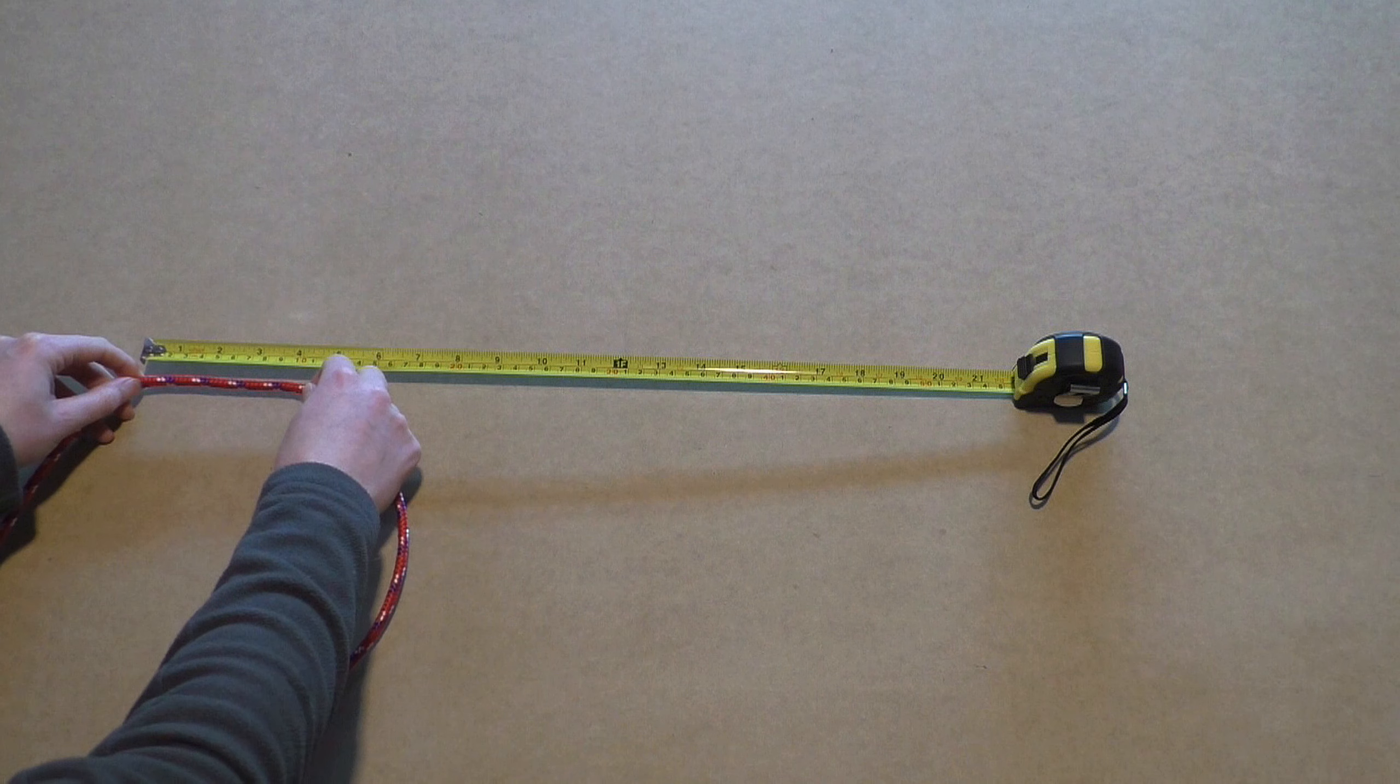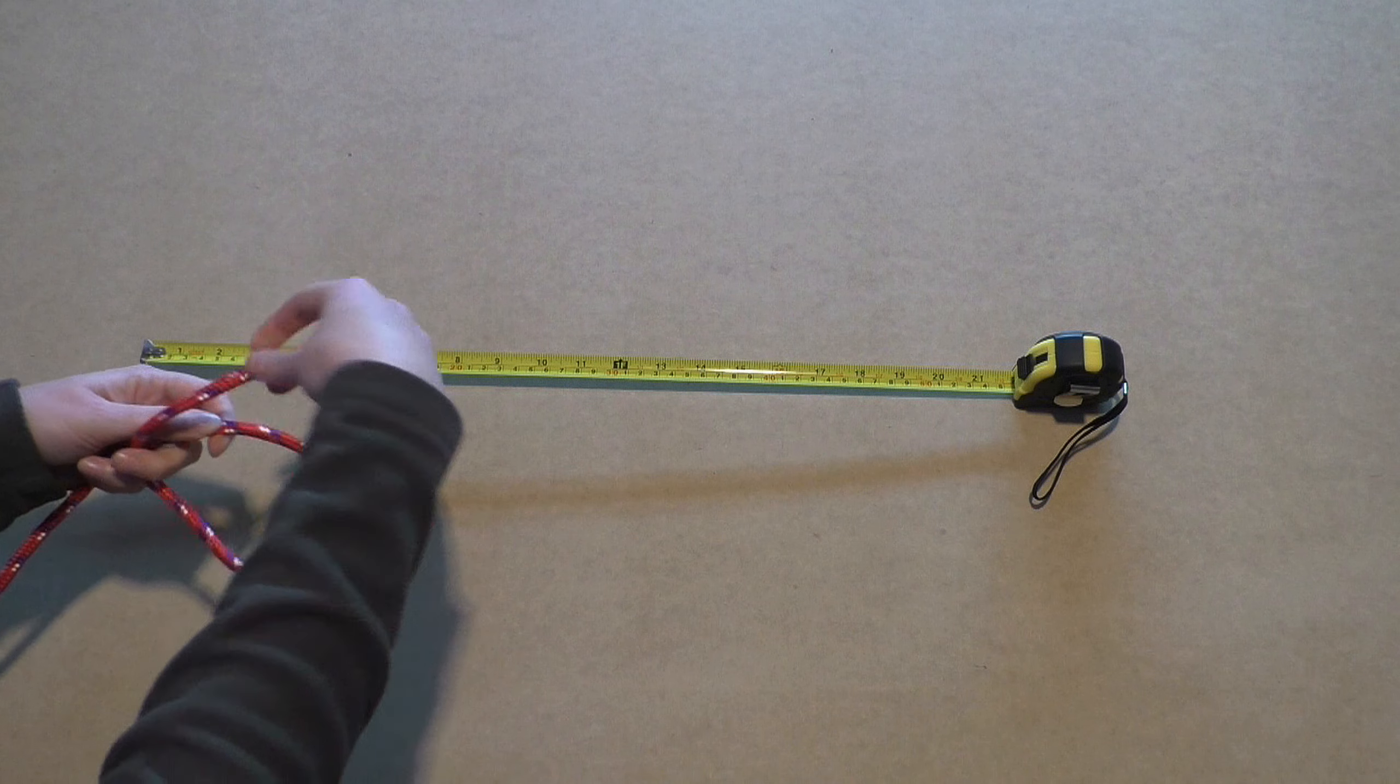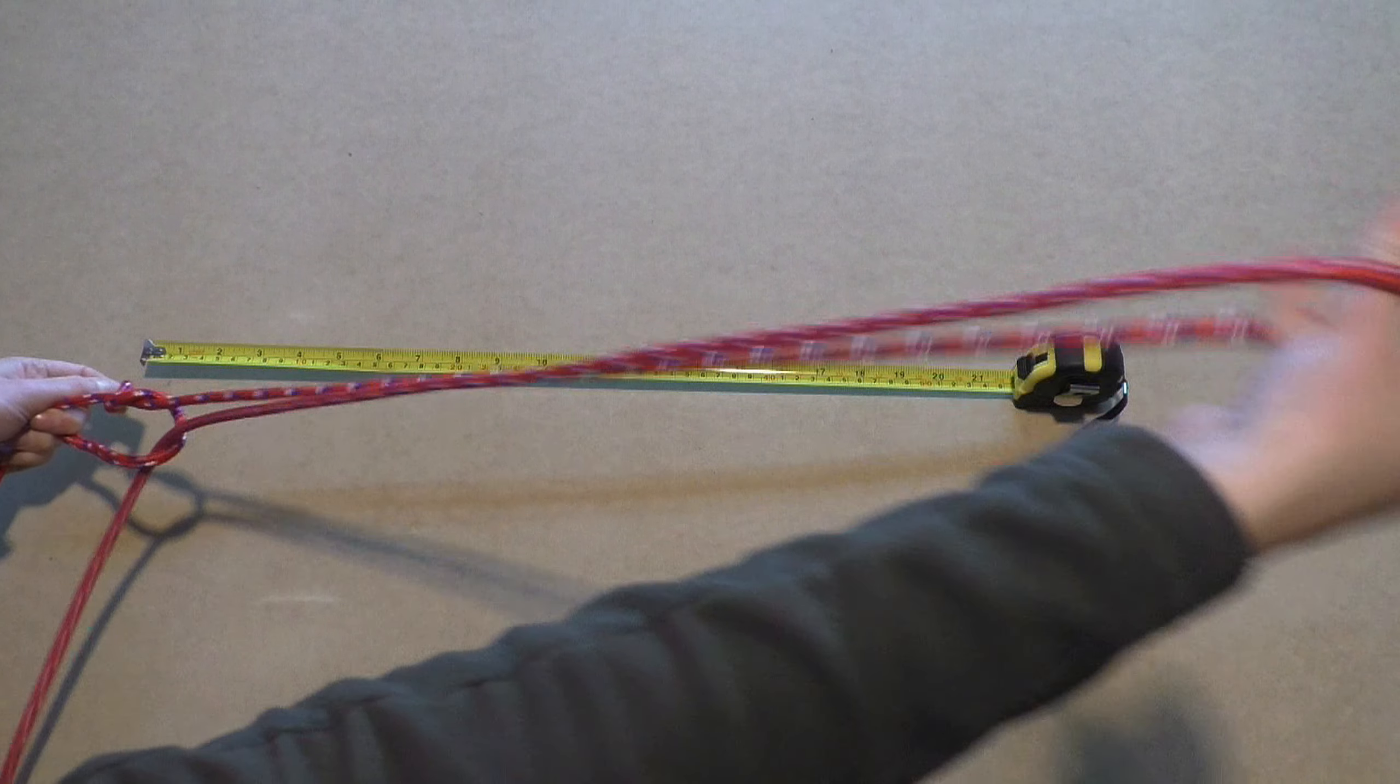From this new middle, move 10cm to one side. There you make an overhand knot. If you want to know how to make the overhand knot, click the link in the description.